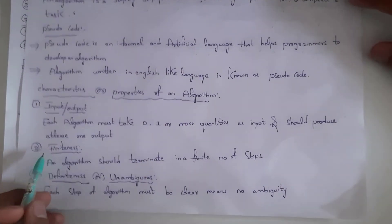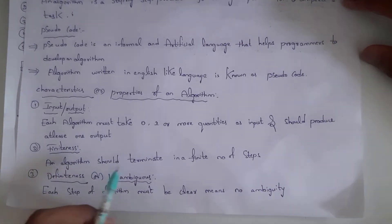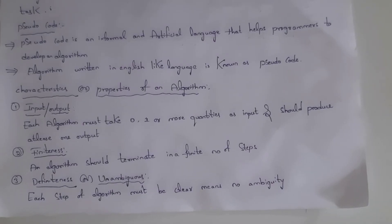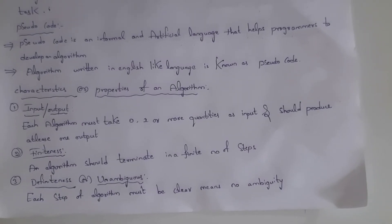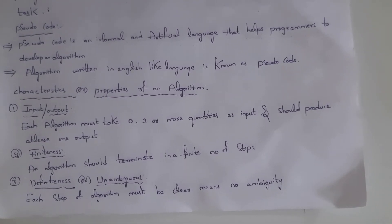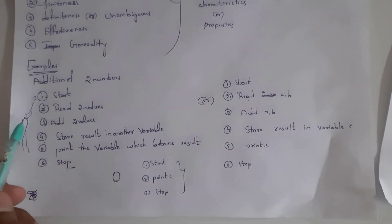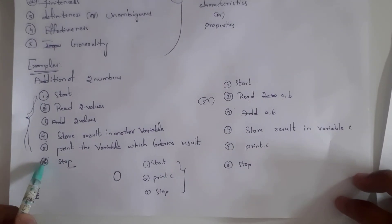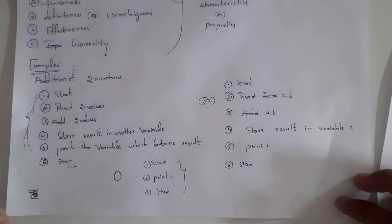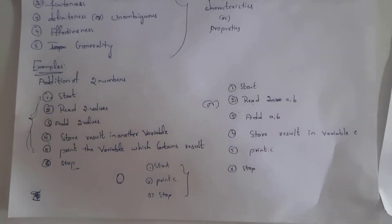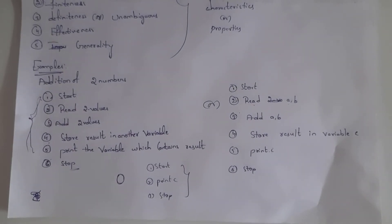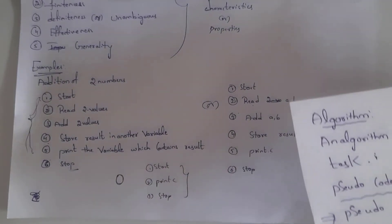The second property is Finiteness. An algorithm should terminate in a finite number of steps — that is, a countable number of steps. There should not be any infinite steps in an algorithm. For example, in the addition algorithm, it terminated in six steps: one, two, three, four, five, six — which are countable.